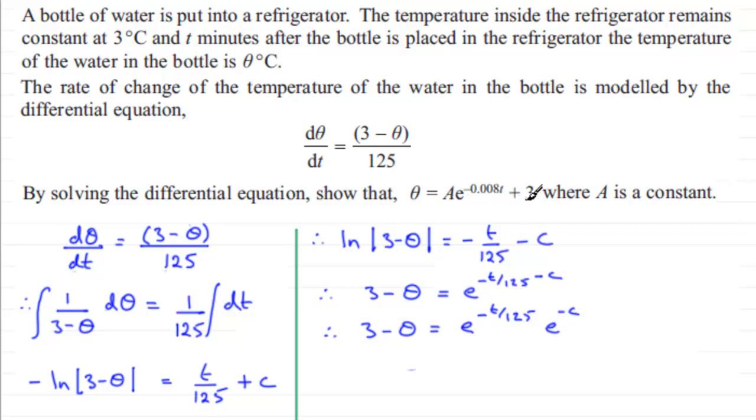So what I'm going to do is add theta to both sides and I'm going to subtract this term from both sides. So if I do that I'm going to end up with theta equaling the negative of this, so I'm going to write e to the minus c first of all, e to the minus c, and then I'm going to have e to the power (minus t over 125) and then plus 3.